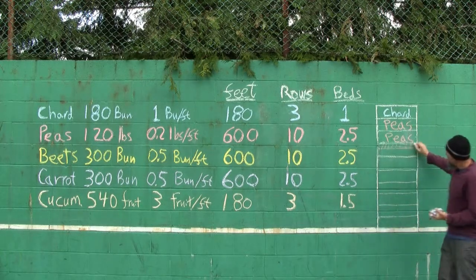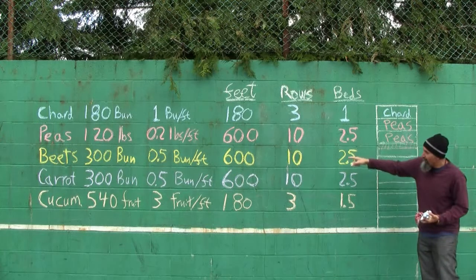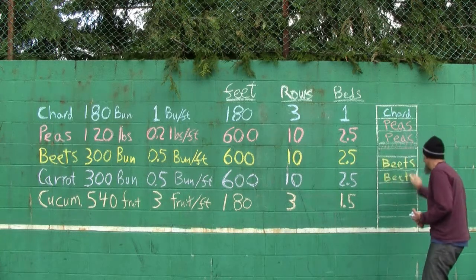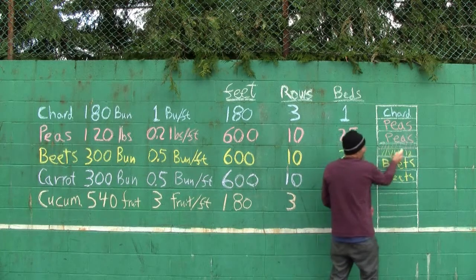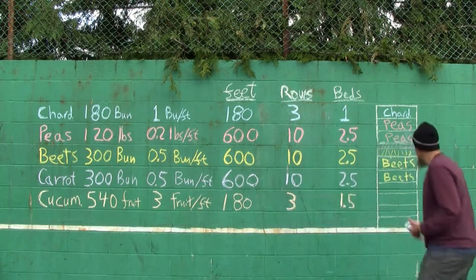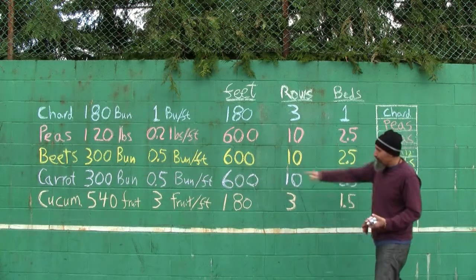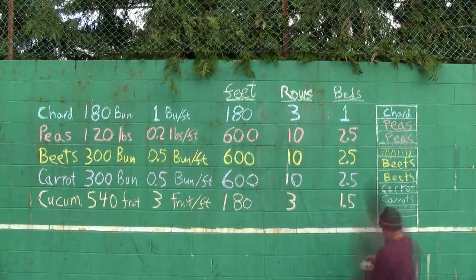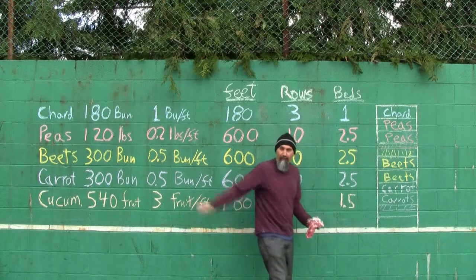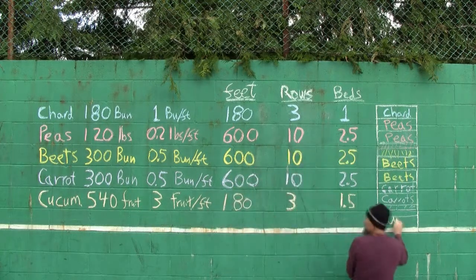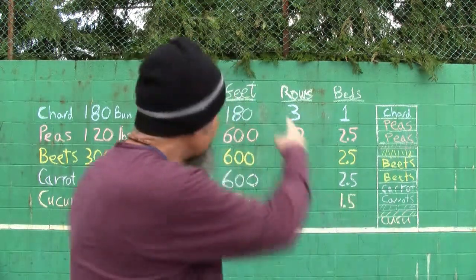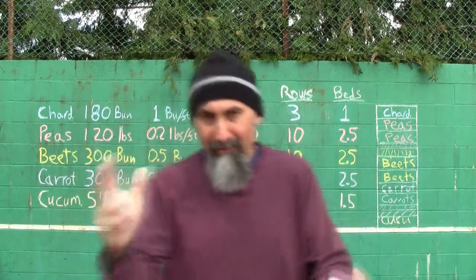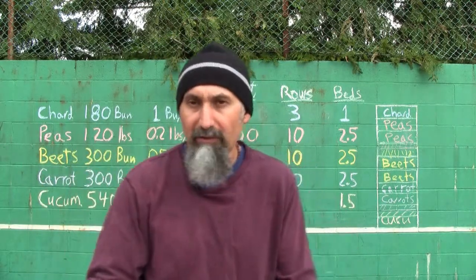We've got two and a half beds of peas, two and a half beds of beets, two and a half beds of carrots, and one and a half beds of cucumber. Now I'm going to color those areas based on the crops we have, so we get a nice visual of exactly what our field is going to look like.